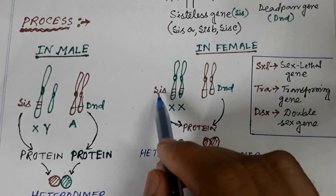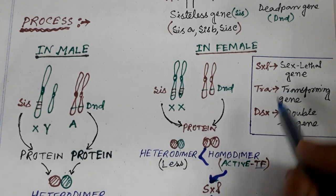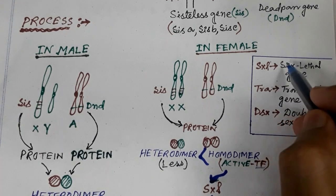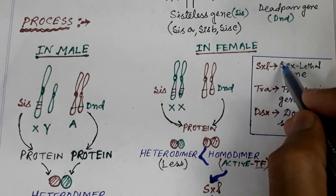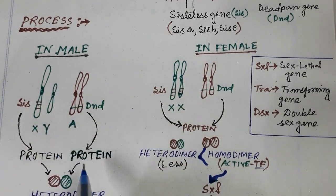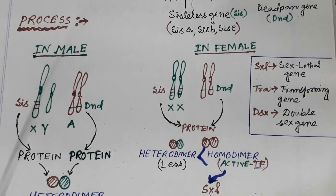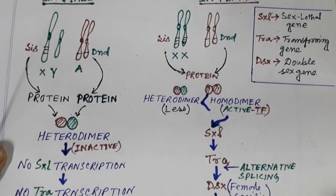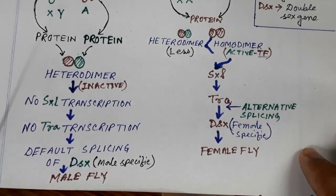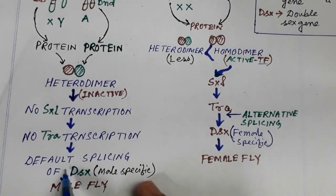The transcription factor can form a homo dimer or a hetero dimer. The hetero dimer is an inactive transcription factor. SXL — sex-lethal gene — functions as a transcription factor. We can see that the default splicing and DSX gene default splicing is involved, and male-specific splicing produces a different outcome.